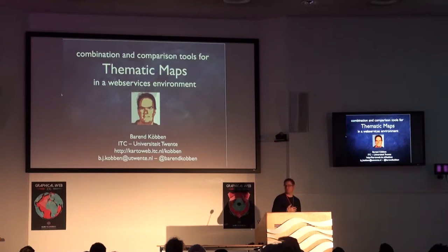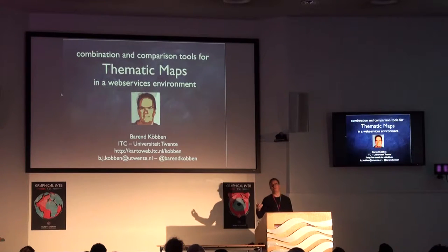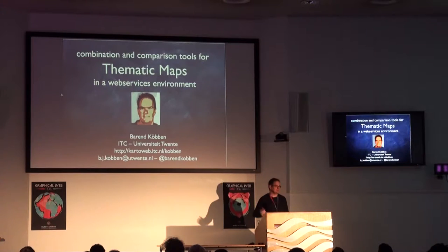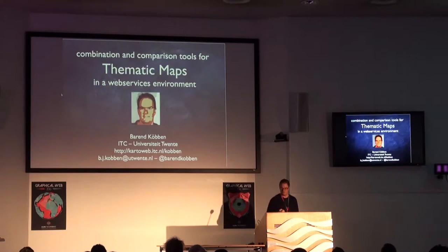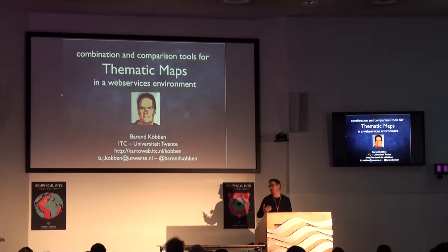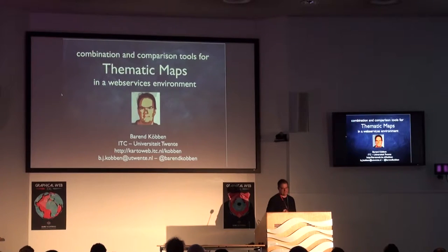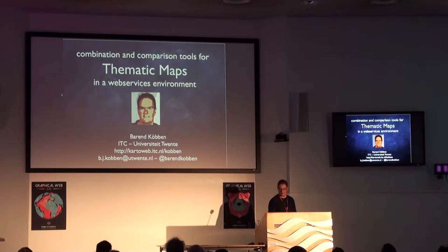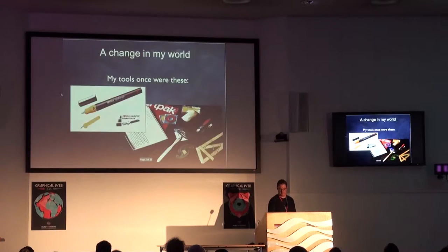This links between the two previous talks in that we use data from web services, not usually the very big ones like Amazon, but in a similar surroundings. The data comes from services somewhere, and we want to use a good UX and a good way of telling the story of the data in maps, and specific thematic maps about certain things. What I want to present today is especially some experiments we did about combining and comparison tools for these thematic maps.